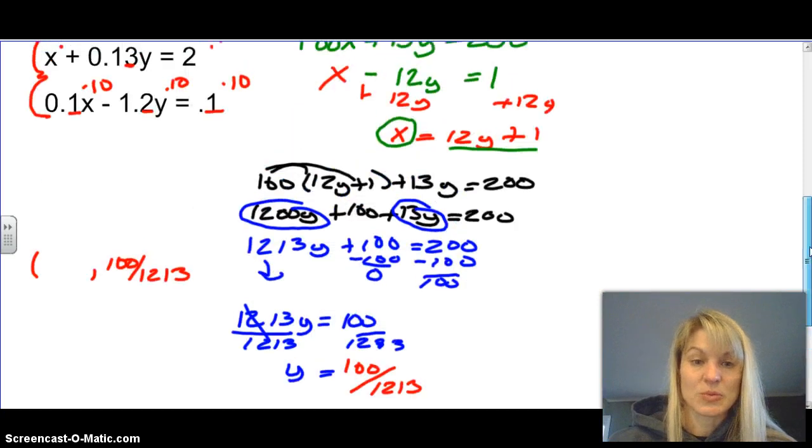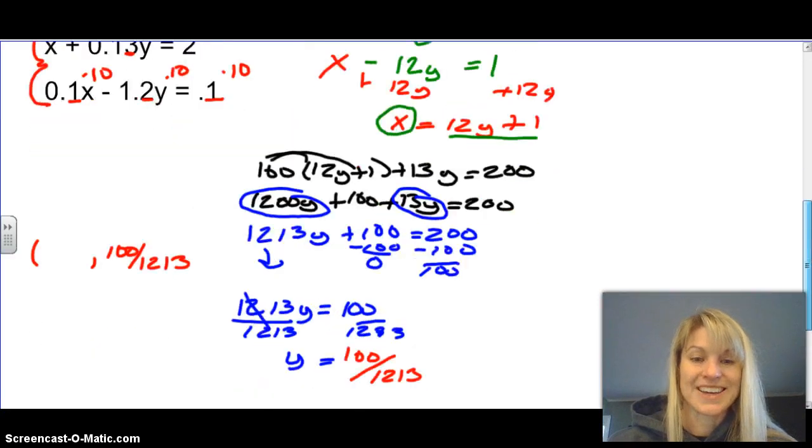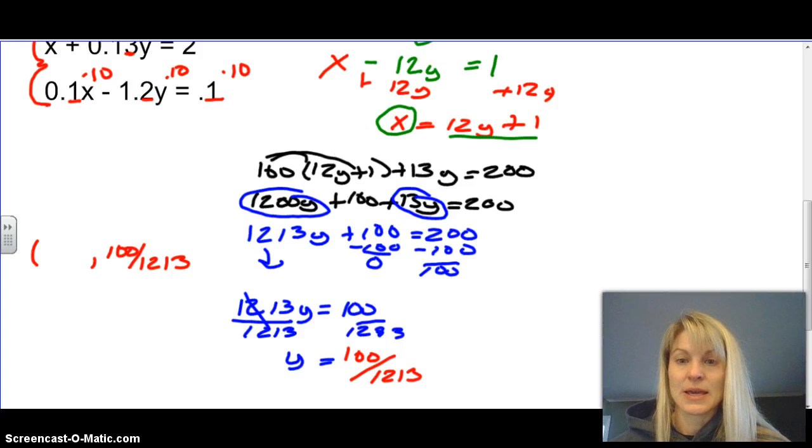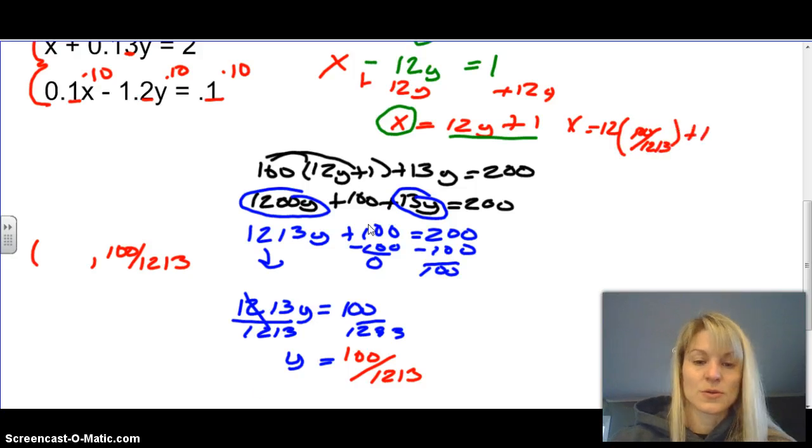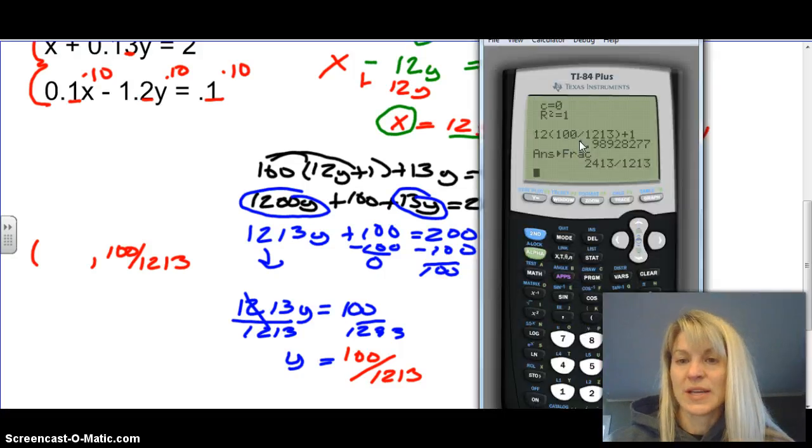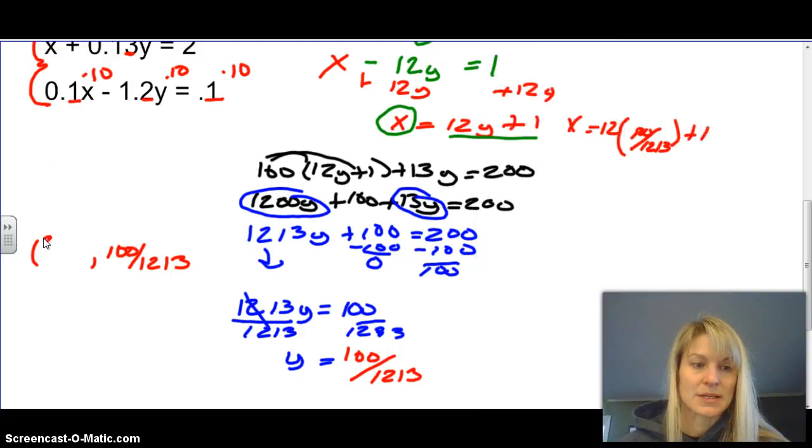So then we actually got to go back in and plug that in for y to get x. So we're going to go back to this equation here. And I'm going to say x equals 12. Now we know y is this 100 over 1213. This was a messy example to show you guys. So I'm going to go to my calculator. So I put in 12 times 100 over 1300 plus 1. I got this. I made it a fraction. So we have a messy number here to put in. But that's okay. We'll make it work. But we should know that it has one solution. Therefore, it is a consistent equation.